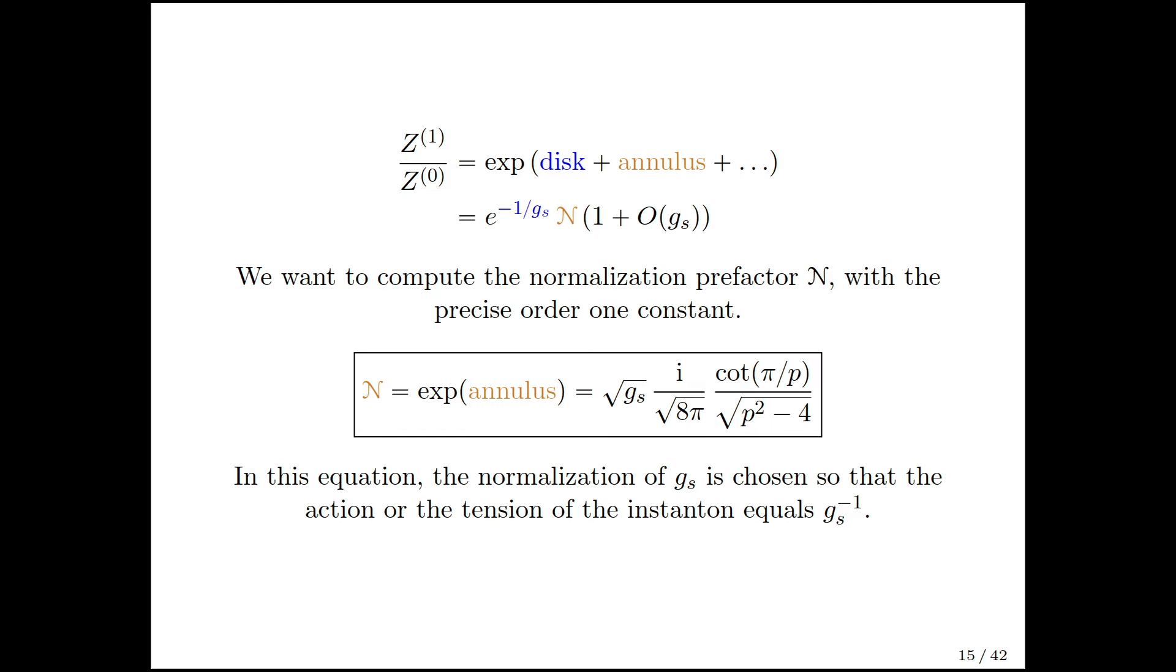The result I want to flash here for a particular non-perturbative correction: the exponential of the annulus is like the square root of g string, a factor of i, and a precise numerical factor which has some trig function of this p parameter. I've chosen the normalization of g string so that the tension of the instanton is just g string to the negative 1. The goal will be to explain where this formula came from, from the string theory side.